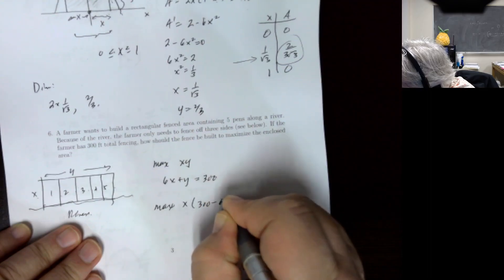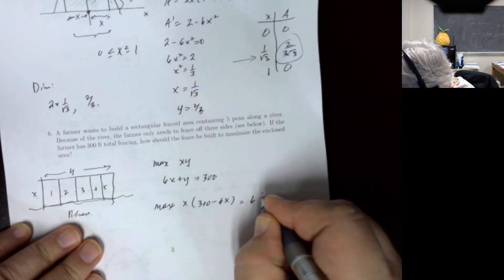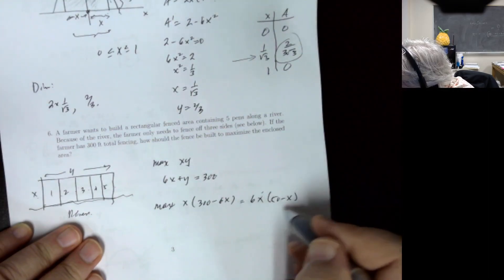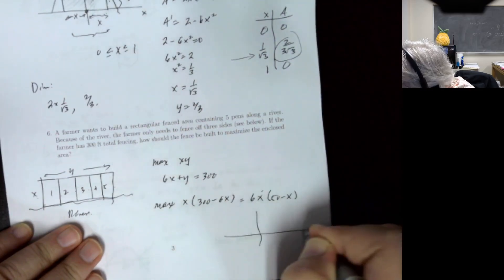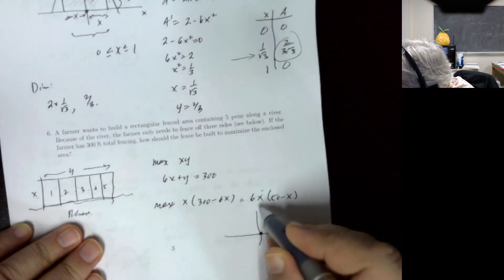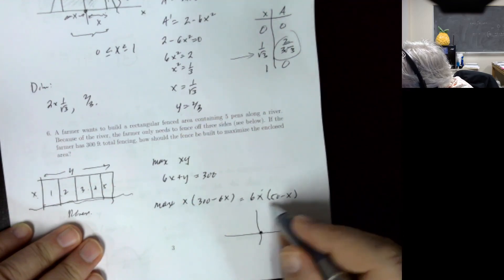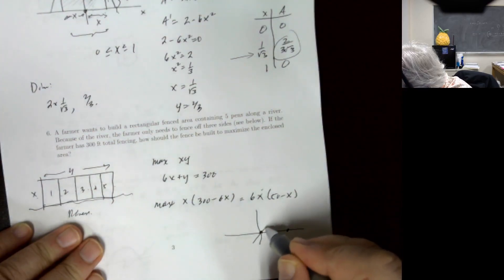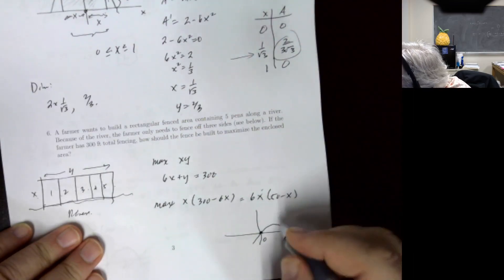We want to maximize the area x times y. Substituting y equals 300 minus 6x gives area equals x times (300 minus 6x). Factoring out 6 gives 6 times x times (50 minus x). This is a downward-opening parabola with roots at x equals 0 and x equals 50, so the maximum is at the vertex, x equals 25.